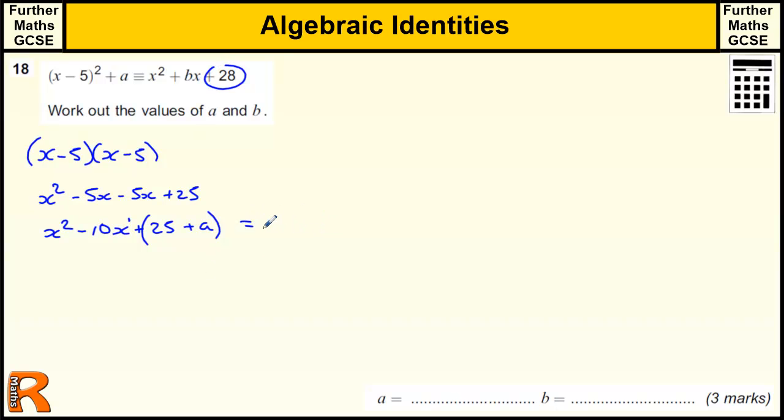OK, and that also helps us with the x because this minus 10 must be the same as the b. So that tells us that b equals minus 10 because the minus 10 is the only bit in front of the x, and this b is in front of the x, that means they must be the same.